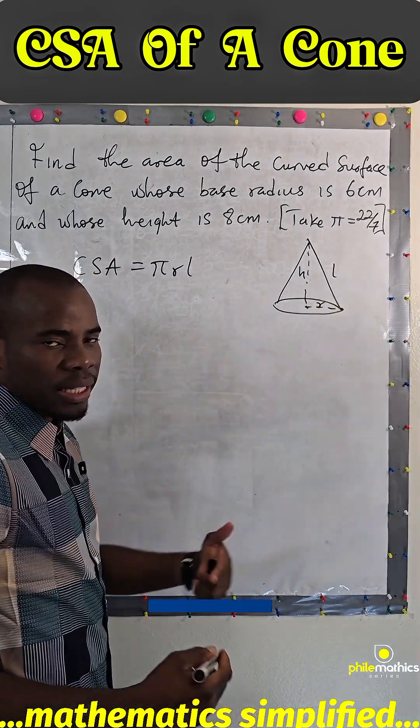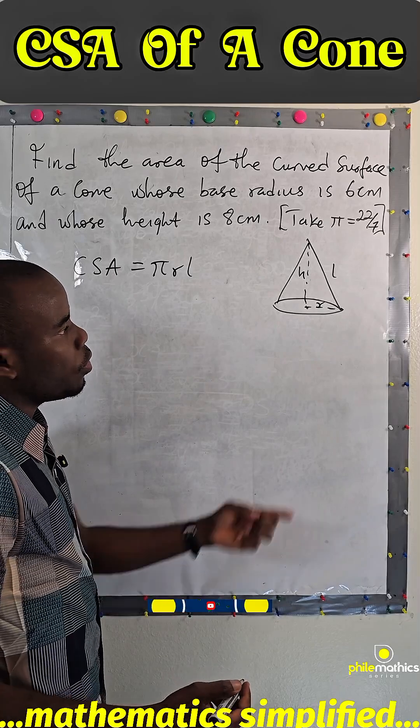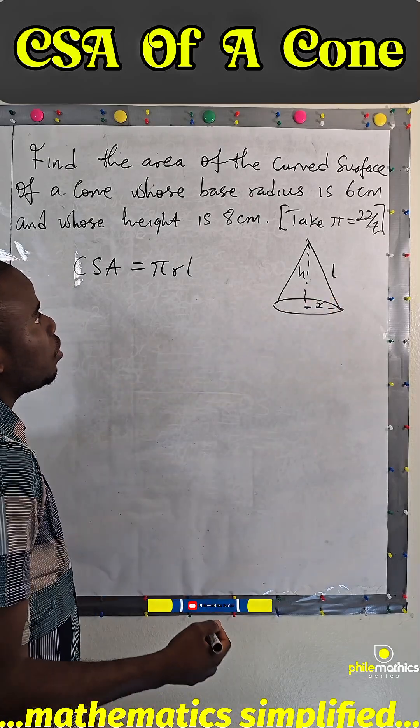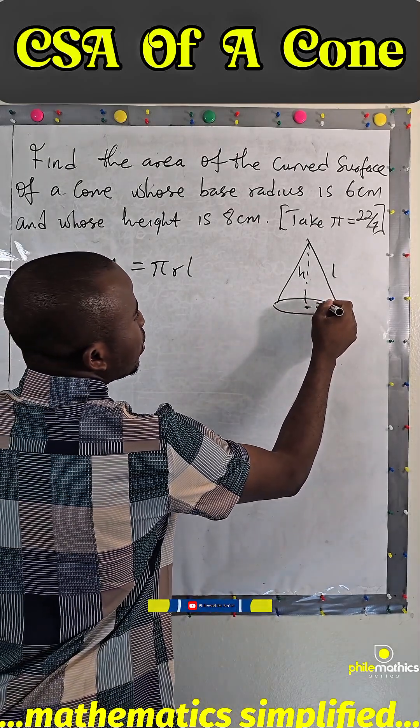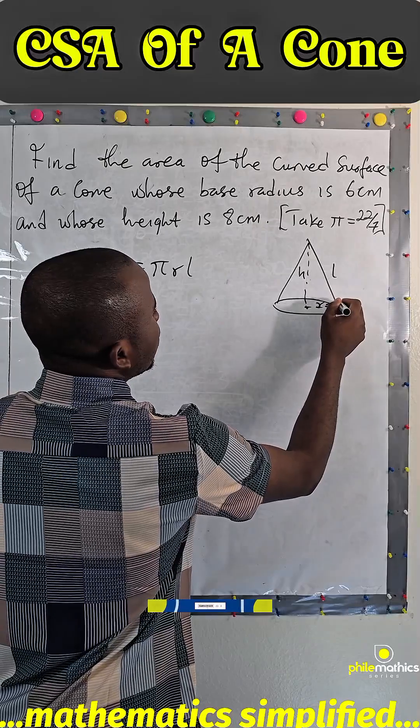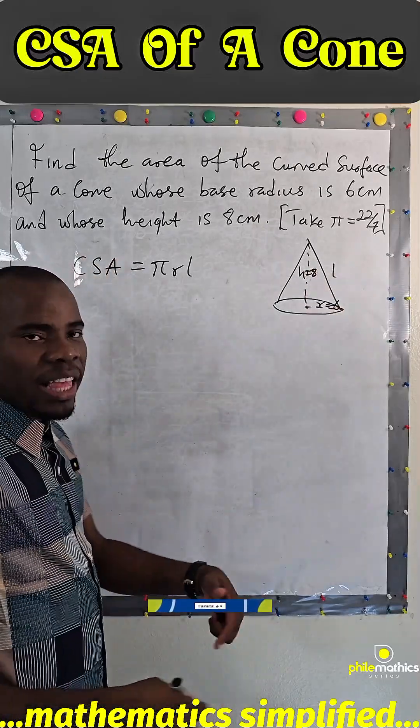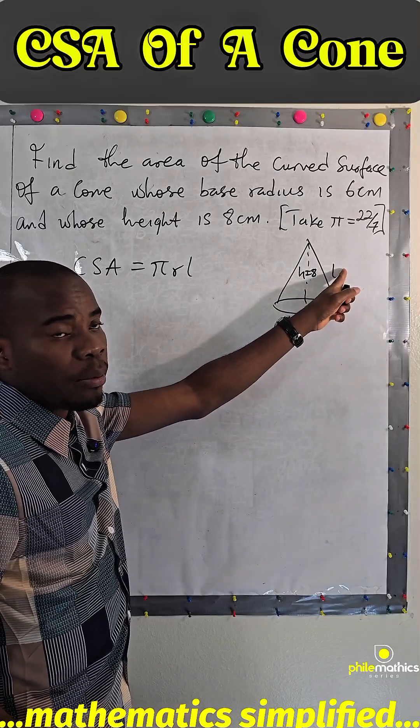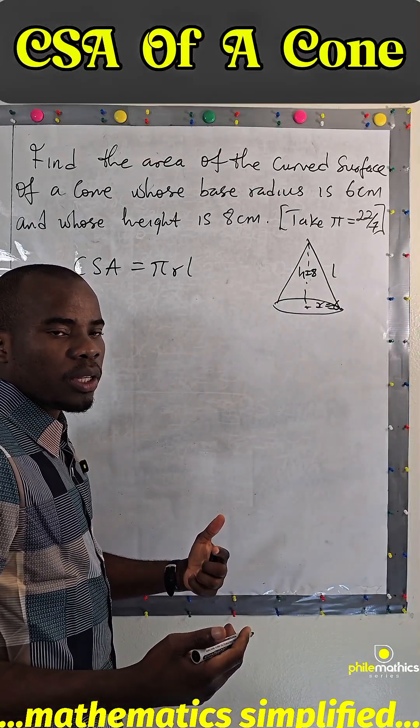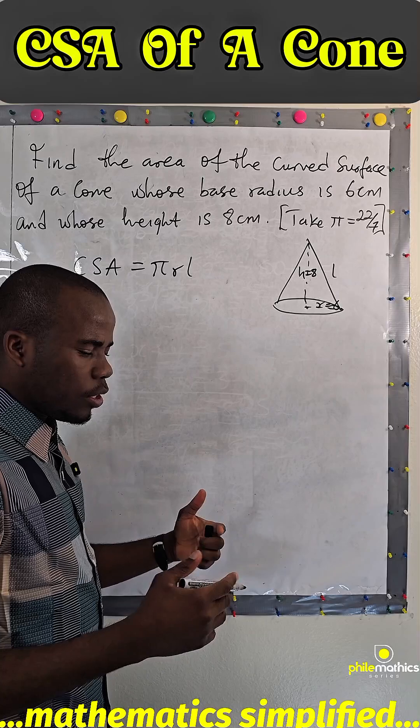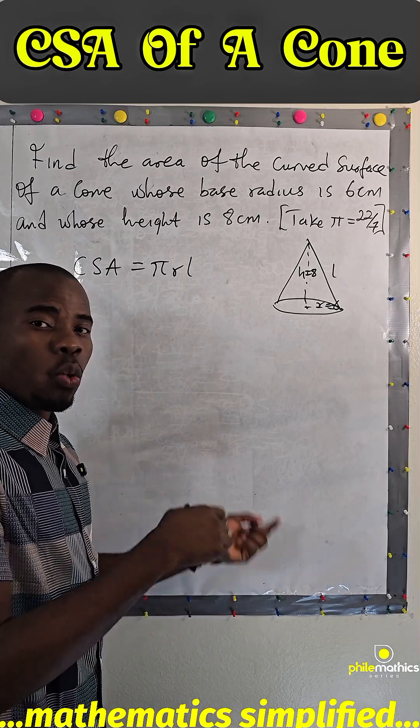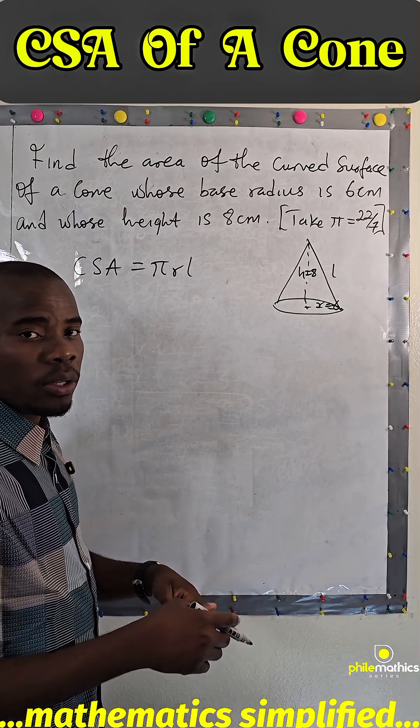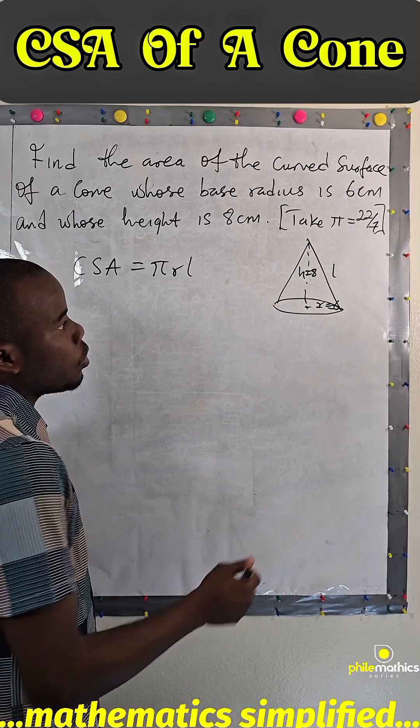And to get the slant height, we can easily use Pythagorean theorem to get what l is. Since this is 6 and this is 8, by Pythagorean triple we already know that l is 10, because Pythagorean triple simply means three numbers such that the sum of the square of the first and the second gives the third.